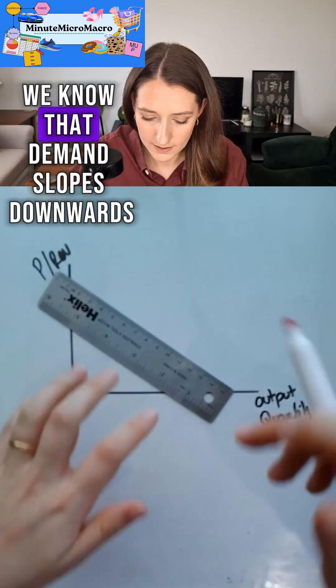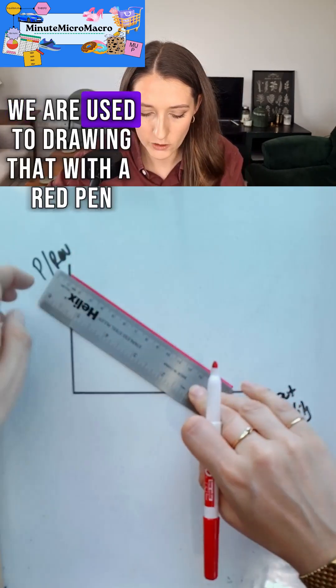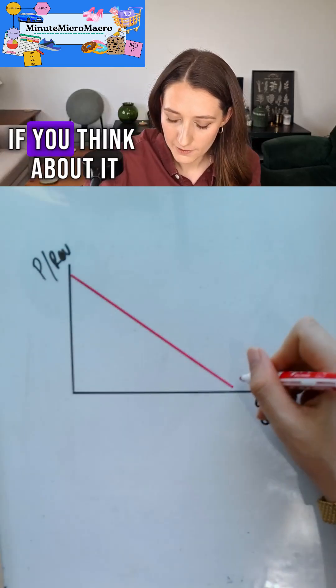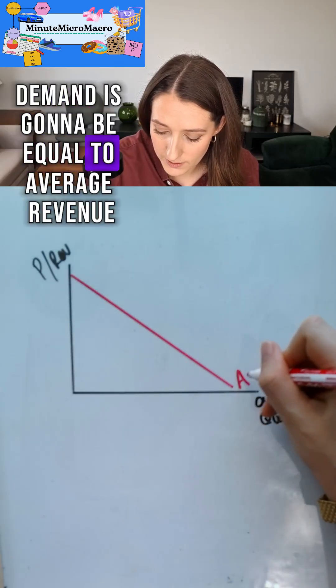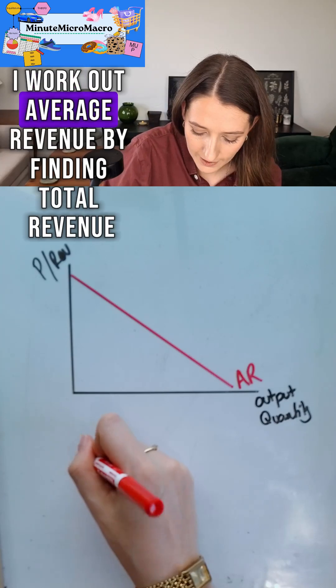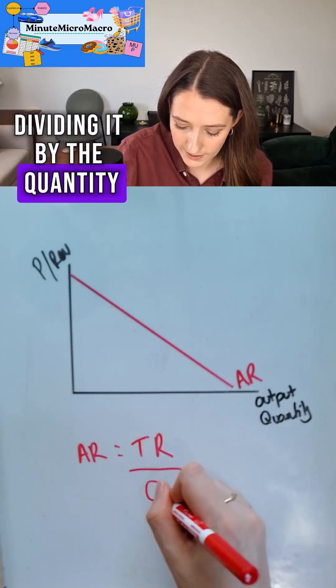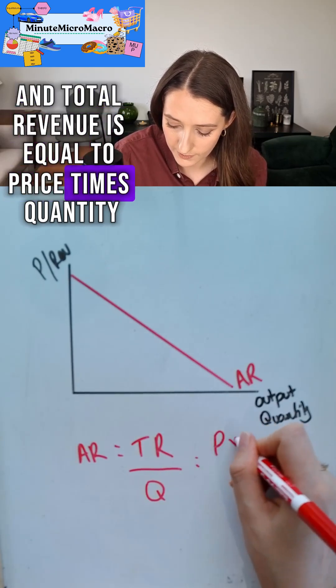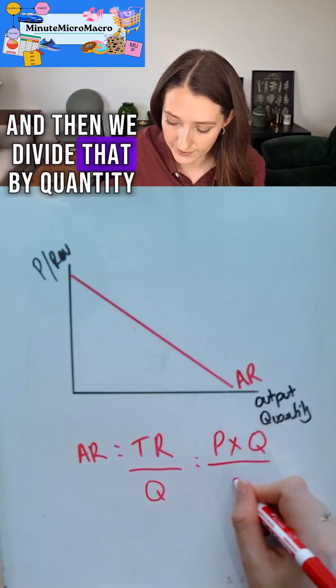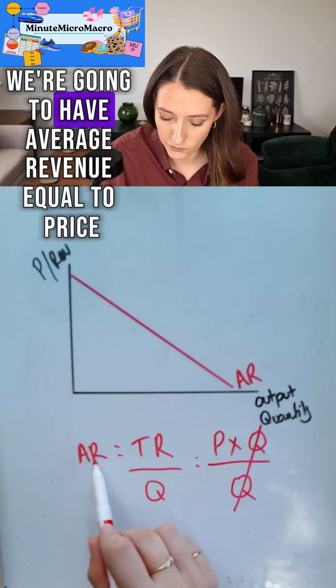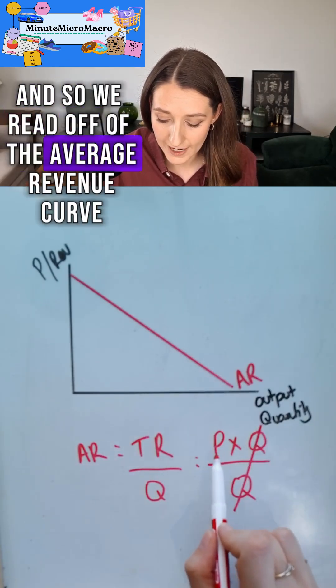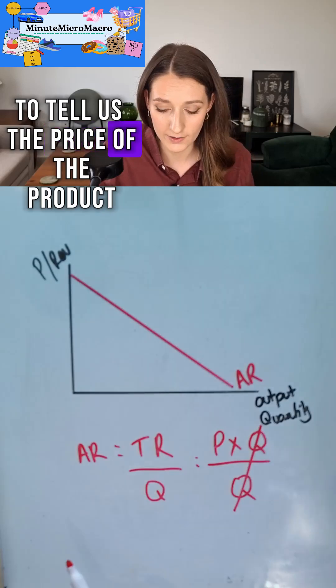We know that demand slopes downwards and we are used to drawing that with a red pen. Demand is going to be equal to average revenue. If I work out average revenue by finding total revenue dividing it by the quantity, and total revenue is equal to price times quantity, and then we divide that by quantity, we're going to have average revenue equaling price. So we read off of the average revenue curve to tell us the price of the product.